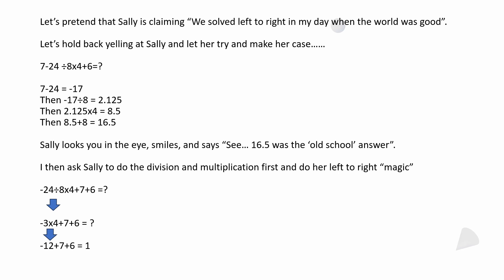Let's pretend that Sally is claiming we solved left to right in my day when the world was good. Let's hold back yelling at Sally right now and let her try and make her case. She's going to go 7 minus 24 divided by 8 times 4 plus 6. In her mind, you take 7 minus 24 and get negative 17. Then you're going to end up with negative 17 divided by 8 because you're just going left to right. You're going to get 2.125. Then you're going to take 2.125, multiply it by 4, get 8.5. Then 8.5, it should be adding 6 at the end there. It looks like I have a mistake, but you're going to get probably like 14.5. I don't know why I have plus 8. It looks like I have a typo there. It should be 8.5. The very last thing was plus 6, so it should have been 14.5. Apologize for that.